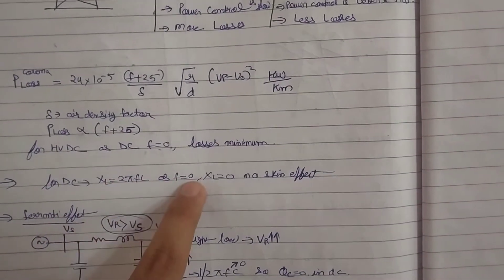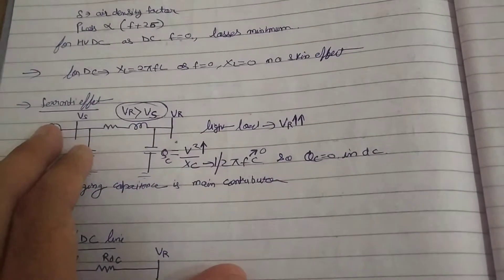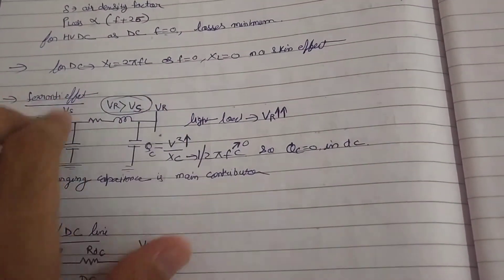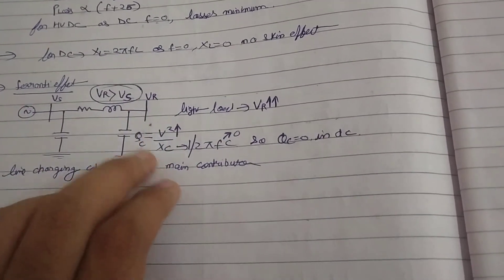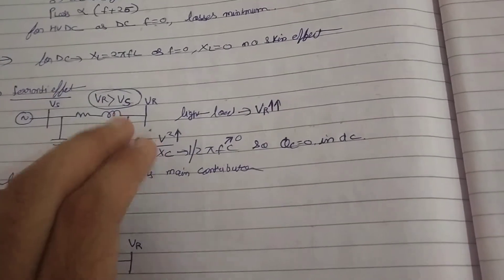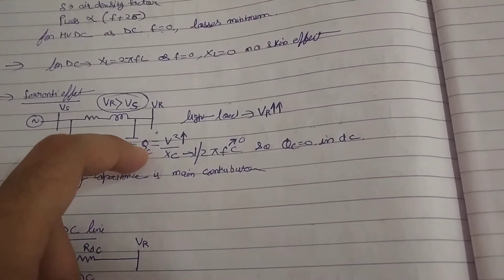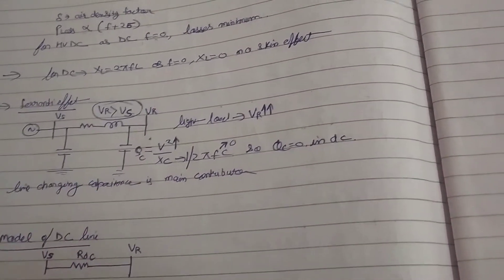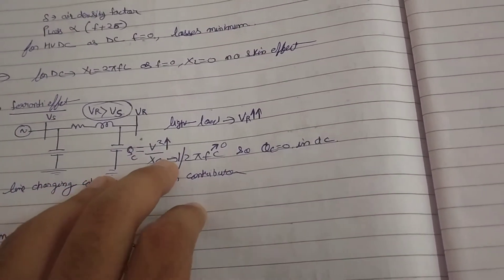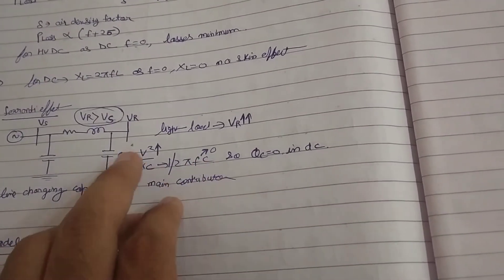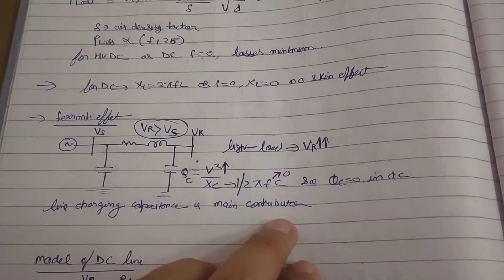For DC, XL = 2πFL, and since F = 0, XL = 0, so the skin effect does not occur. Regarding the Ferranti effect: the receiving-end voltage becomes greater than the sending-end voltage during light load conditions. This happens because of the capacitive effect of the transmission line to ground. In DC, frequency is zero, so XC is infinite, reactive power QC = 0, meaning less charging current in the conductor and no Ferranti effect.